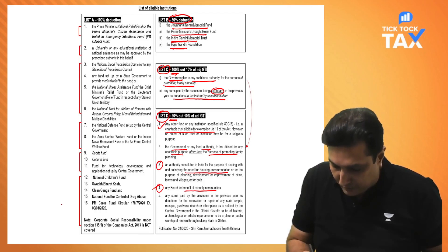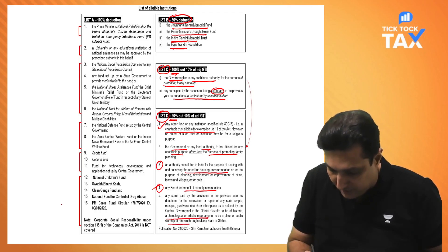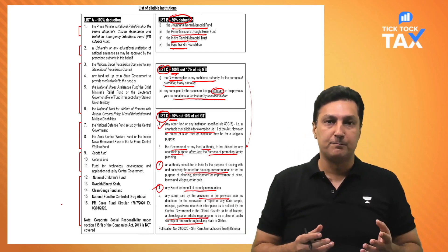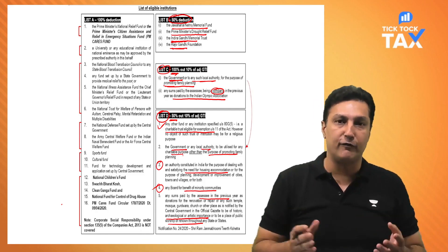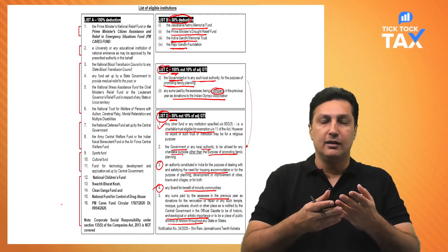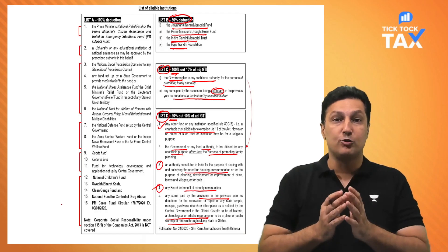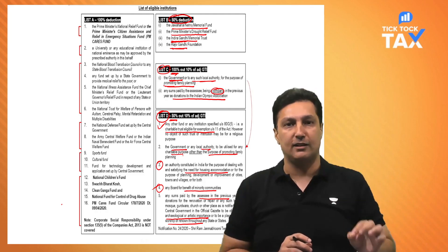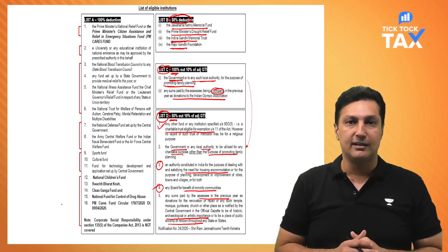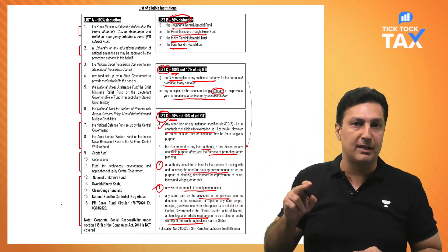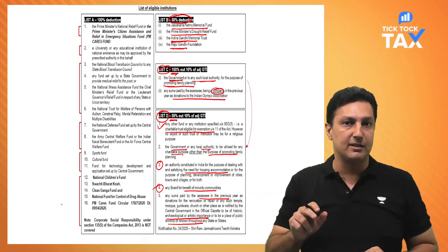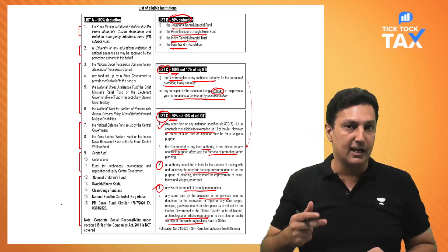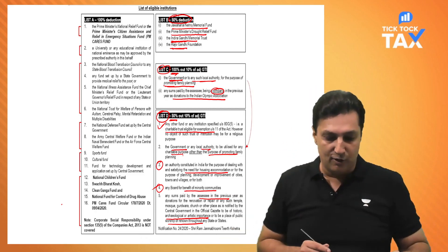The last D-list entry: institutions of archaeological, historical, and religious importance — like the Taj Mahal, Red Fort, Gateway of India, Qutab Minar, or prestigious mandirs and gurdwaras of national eminence. They must have an 80G registration certificate. If you donate for their repair or renovation, you get a D-list deduction. So D-list summary: government/local authority other than family planning, charitable organizations, housing boards, minority community boards, and historical/religious places of national eminence.